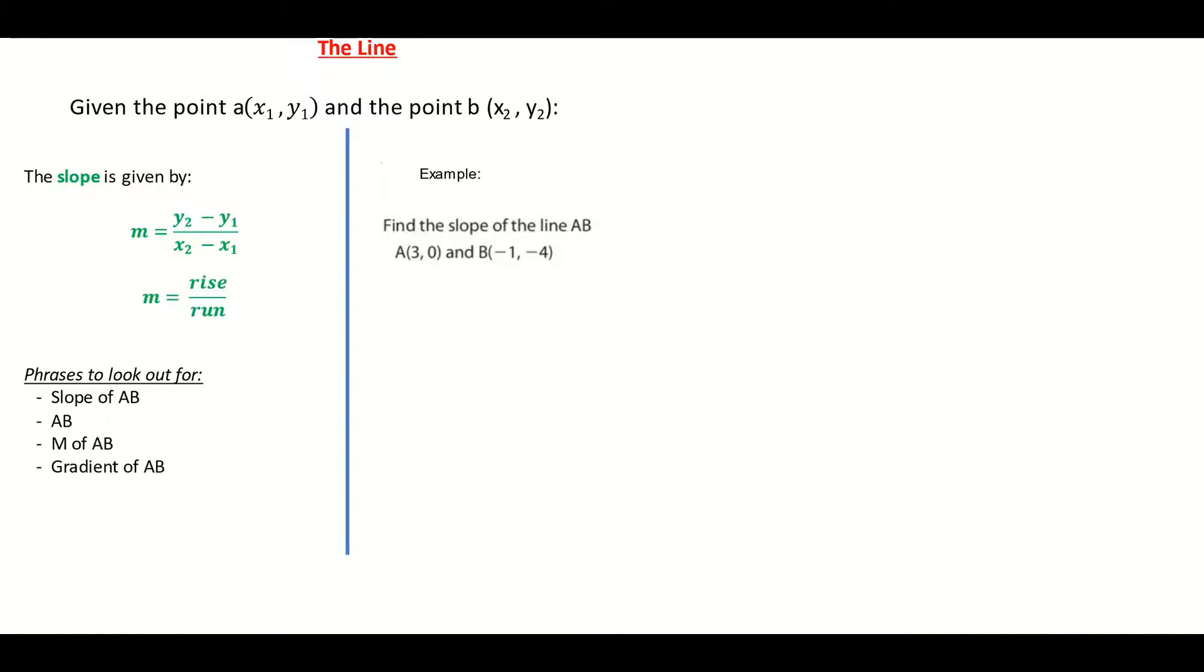Coming over to our example here on the right hand side, I'm saying find the slope of the line AB and I've given the two points A and B. Like any exam question we do which involves a formula, we should always first of all write down our formula, so my formula here is slope or m is equal to y2 take away y1 over x2 take away x1.